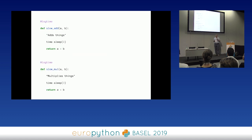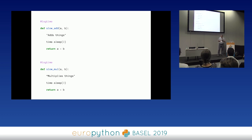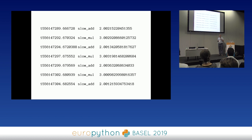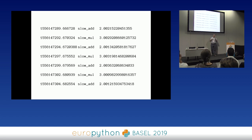Let's apply it: @log_time on slow_add(a, b) — it adds things, does time.sleep(2), returns a + b — and something similar for multiplication. I put in time.sleep because modern computers add things pretty quickly. The resulting log file has: on the left column the timestamp of when I ran the function, in the middle the name of the function — each decorated separately but all writing to the same log file — and on the right how long each took to run.